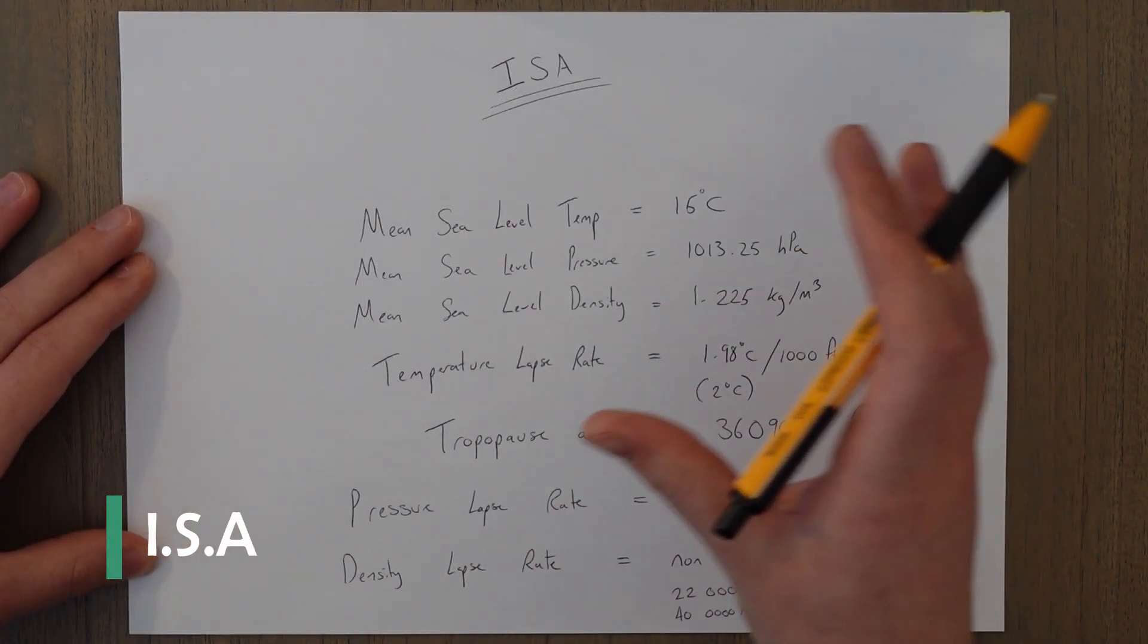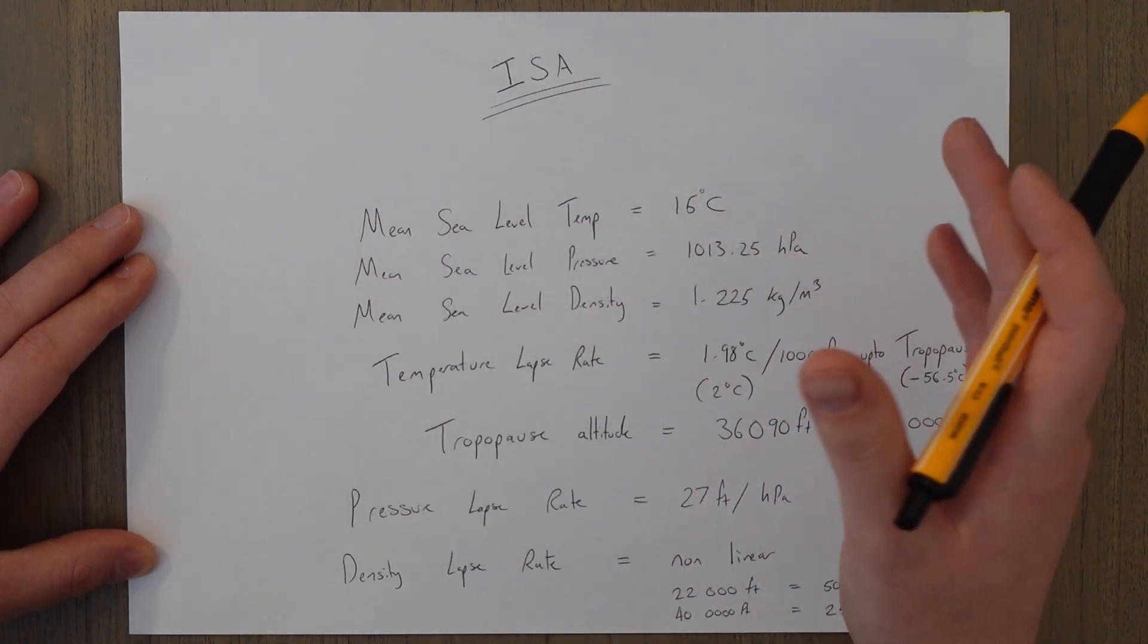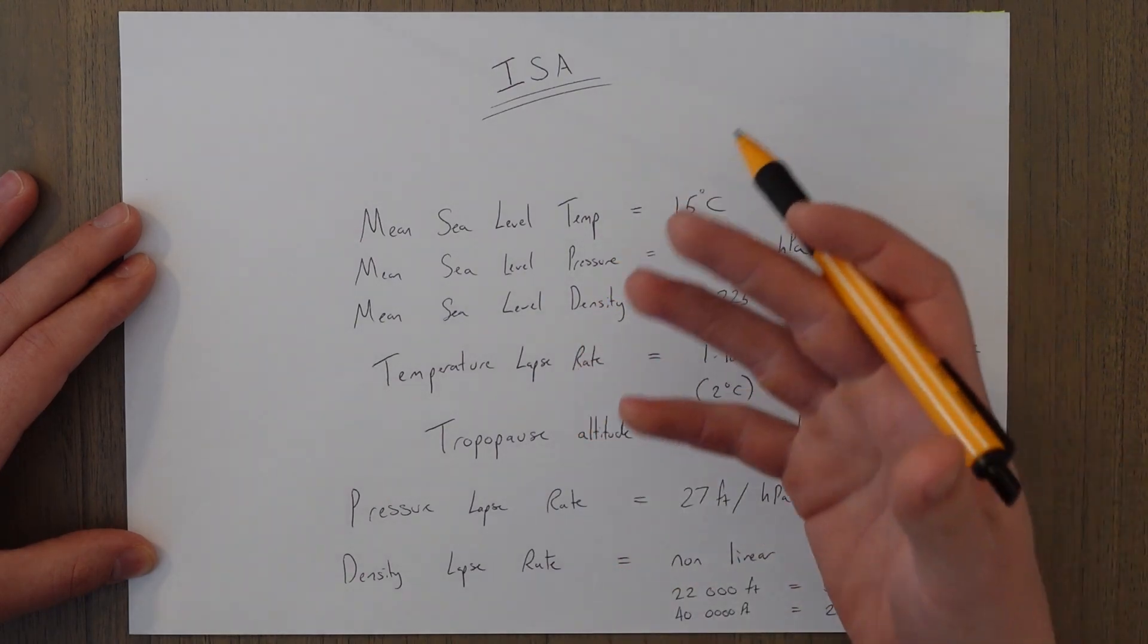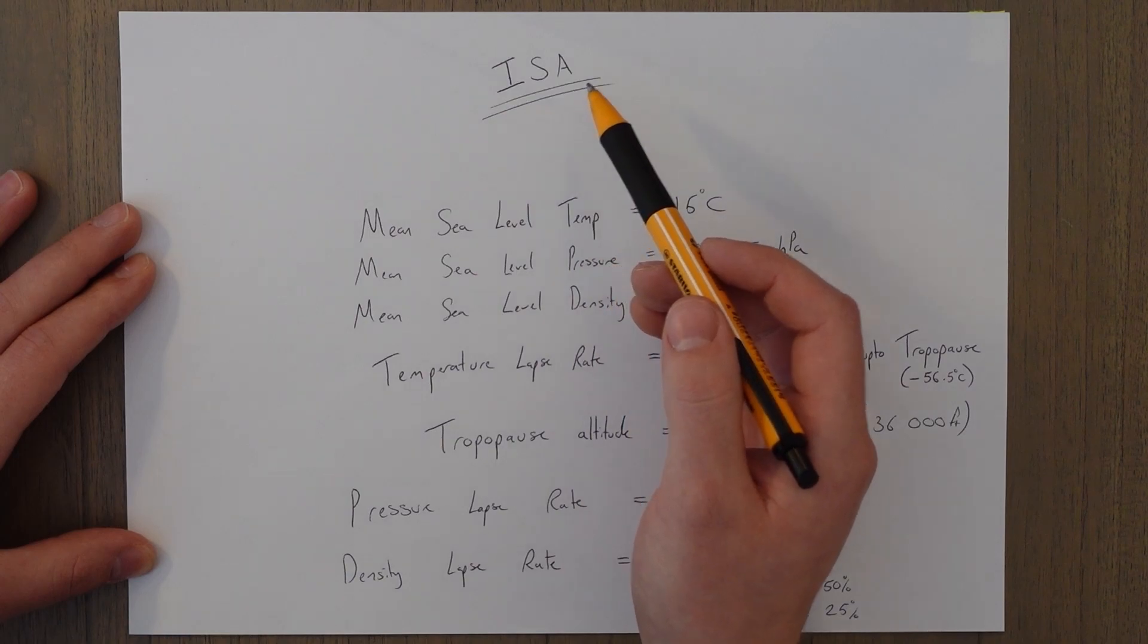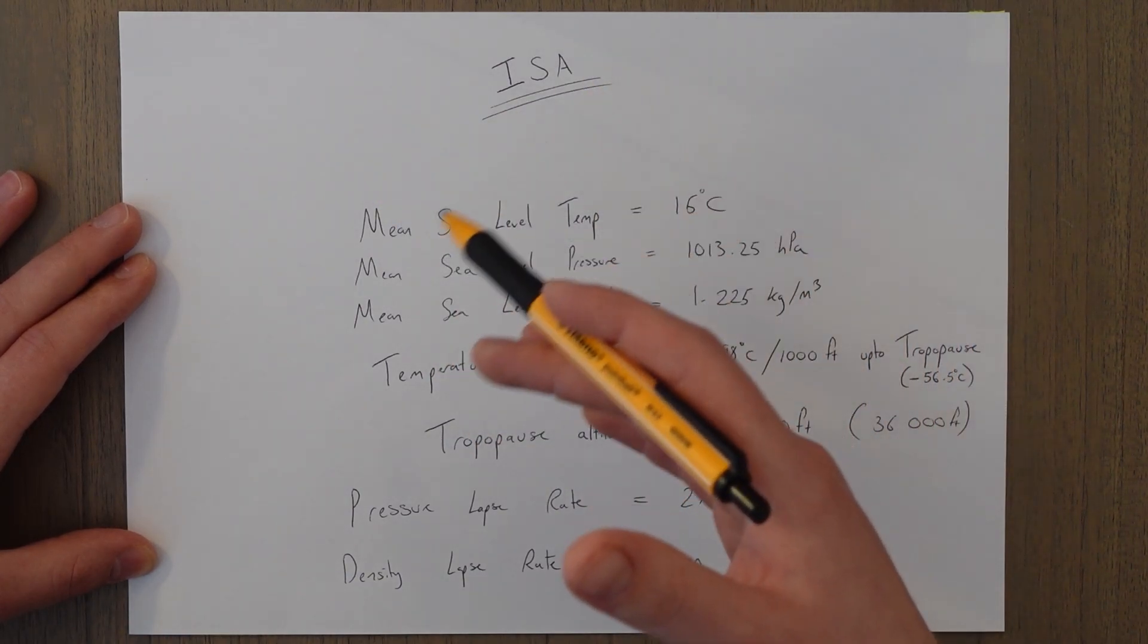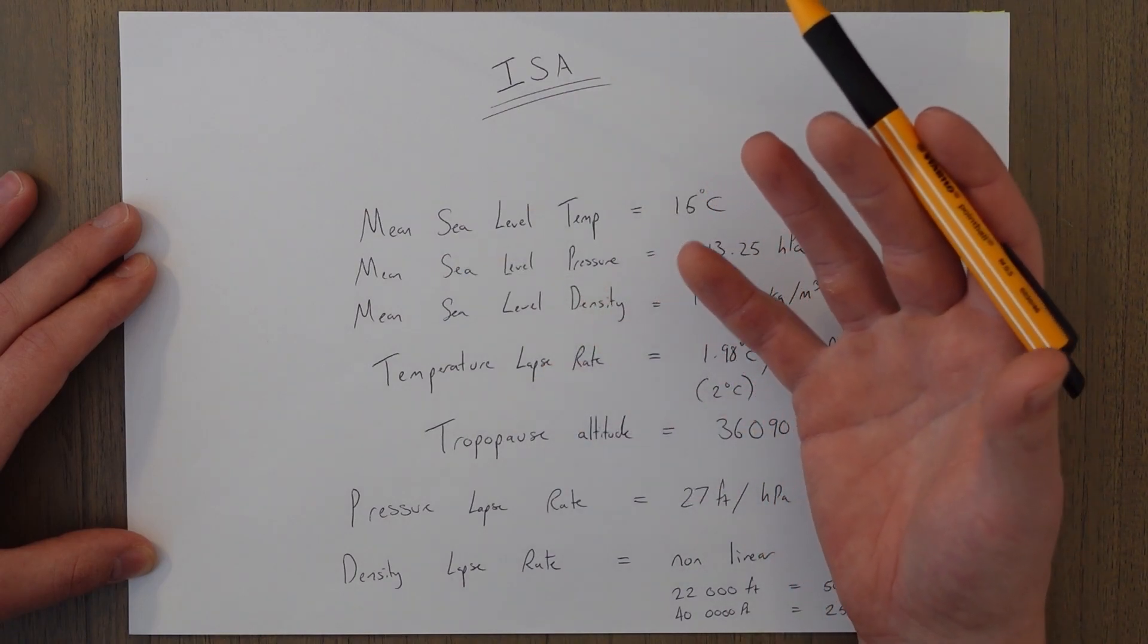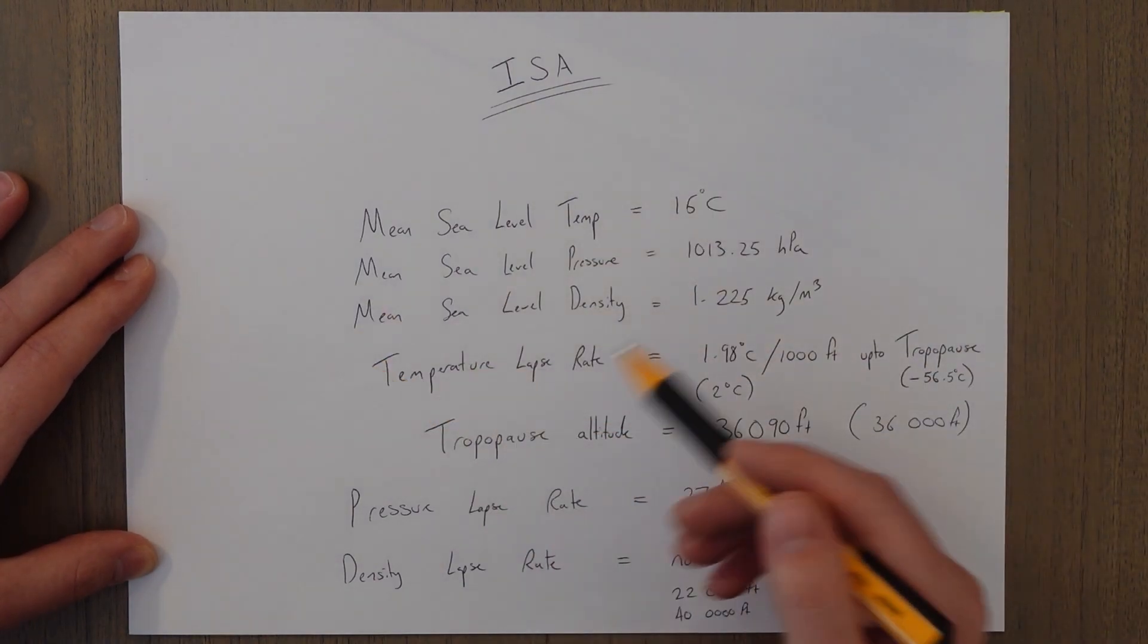Because the atmosphere is constantly changing from day to day and depending on the time of year, all aspects of the atmosphere such as temperature, pressure, and density also change as well. So we use the International Standard Atmosphere for calculations as a baseline, and then we make small variations to this depending on the day's conditions, and it looks like this.